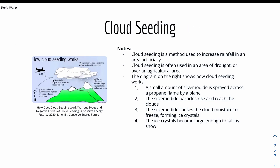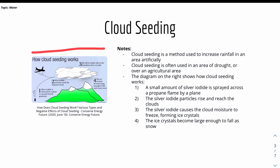There is also cloud seeding, which is a method used to increase rainfall artificially in an area. It's often used in areas of drought or over agricultural areas, as it promotes rainfall in that region. First, silver iodide is sprayed across a propane flame by a plane. Then the silver iodide particles rise and reach the clouds, causing the cloud moisture to freeze, forming ice crystals. The ice crystals become large enough to fall as snow, and as they reach a warmer area, they become rain. That's how cloud seeding works.